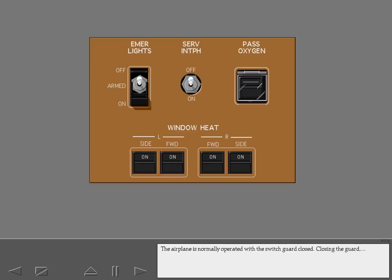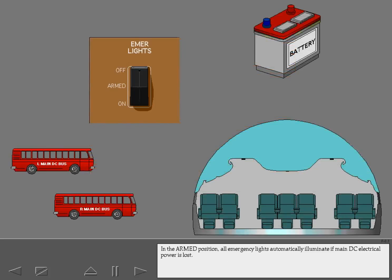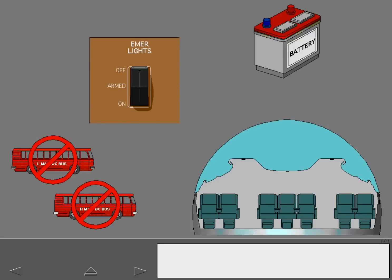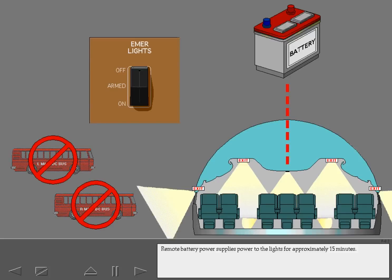The airplane is normally operated with the switch guard closed. Closing the guard places the switch in the armed position. In the armed position, all emergency lights automatically illuminate if main DC electrical power is lost. Remote battery power supplies power to the lights for approximately 15 minutes.